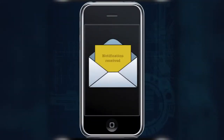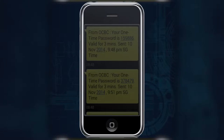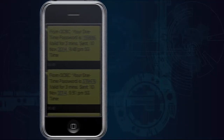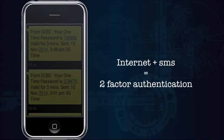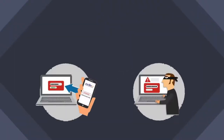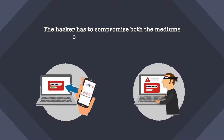Have you ever received an OTP for a transaction — maybe for an e-commerce transaction, online banking transfer, or social media login? When it sends you an OTP through SMS, the internet becomes one medium and the SMS is the second medium through which the second factor of verification comes to you. To pinpoint and hack you individually, the hacker has to compromise both mediums of the verification mechanism.